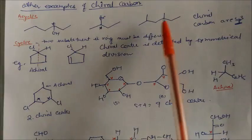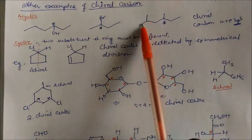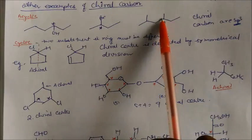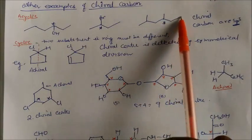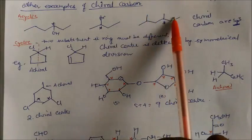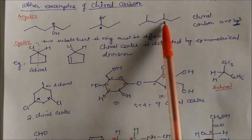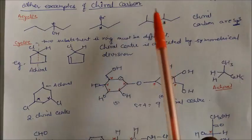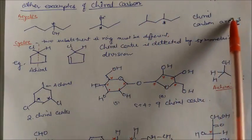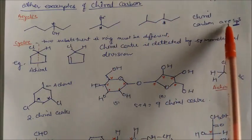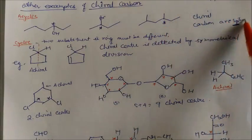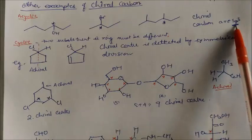In this case, this carbon cannot be chiral because these two groups are the same — the same functional group is there, so this cannot be chiral. But this carbon is chiral because it has different groups: CH3, one hydrogen, and this whole group is different, so one, two, three, and four — four different groups. Note that chiral carbons are normally sp3 hybridized, but this is not always true — we will see one case where chiral carbons are not sp3 hybridized.